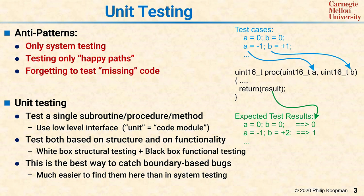A subtle but critical anti-pattern is forgetting to test missing code. Sometimes there are pieces of code that should be there that aren't, and if you look at the code and say we're going to just test based on what's in the code, you won't ever think of those sorts of things, such as exception handlers or missing special conditions, because they're not in the code and it didn't occur to you to test things you're not looking at.